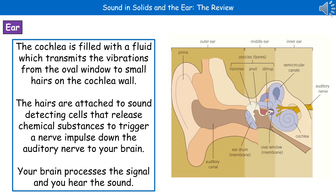Within the inner ear, we have a structure called the cochlea. It's filled with fluid, which transmits the vibrations from the oval window to small hairs located on the cochlear wall. Those hairs are attached to sound-detecting cells, which release chemical substances that trigger a nerve impulse down the auditory nerve to the brain. As the sound is transmitted through the fluid, the hairs vibrate, triggering the chemical release, the nerve impulse travels to the brain, and your brain processes that signal so you hear the sound.